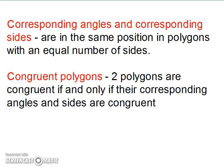Corresponding angles and corresponding sides are in the same position in polygons with an equal number of sides. Congruent polygons: two polygons are congruent if and only if their corresponding angles and corresponding sides are congruent.